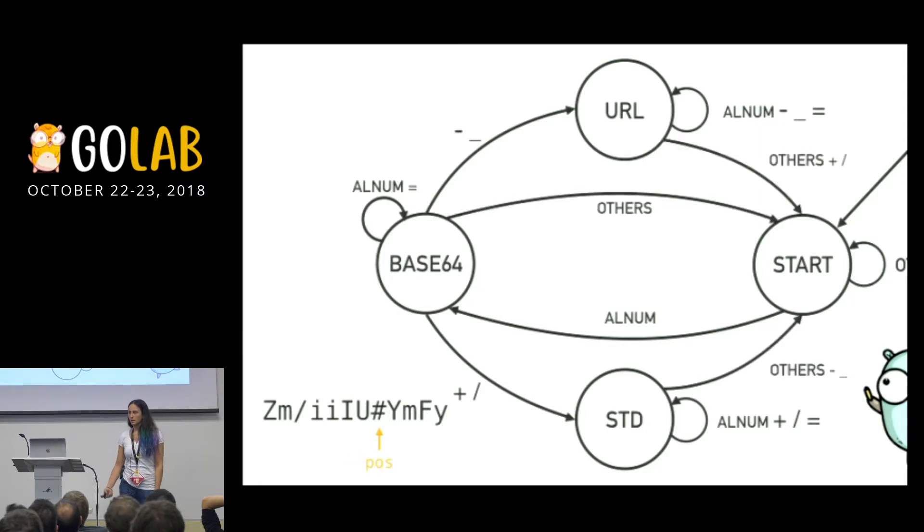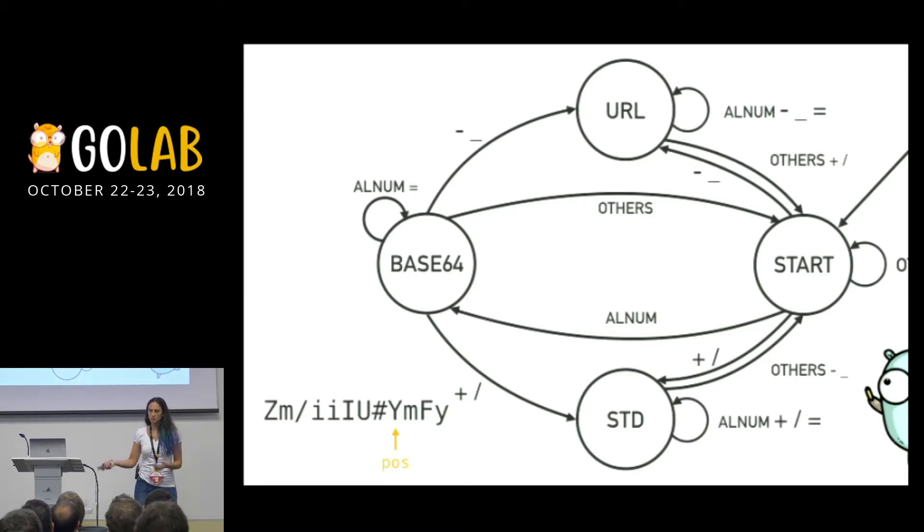And then we find an invalid character. So with an invalid character, we move back to the start state because we do not have an alphanumeric character before. In the start state, we want to decode the chunk that we already parsed. And then keep cycling through the string for other alphanumeric characters or special characters as slash, dash, underscore, and plus, and so on and so forth.